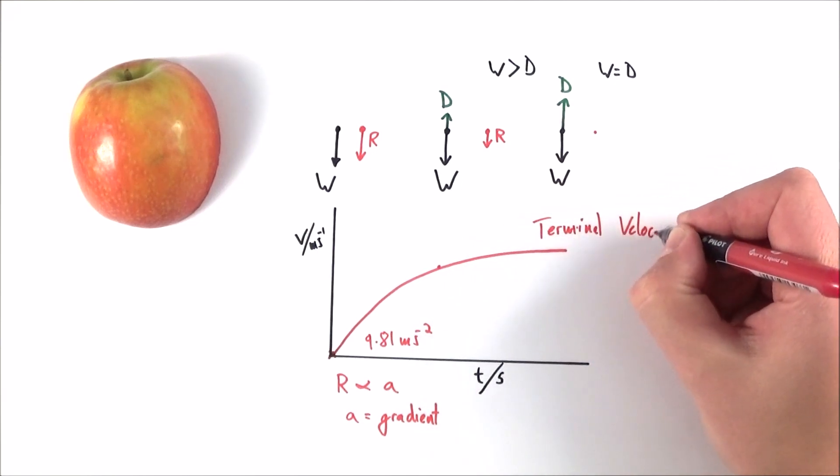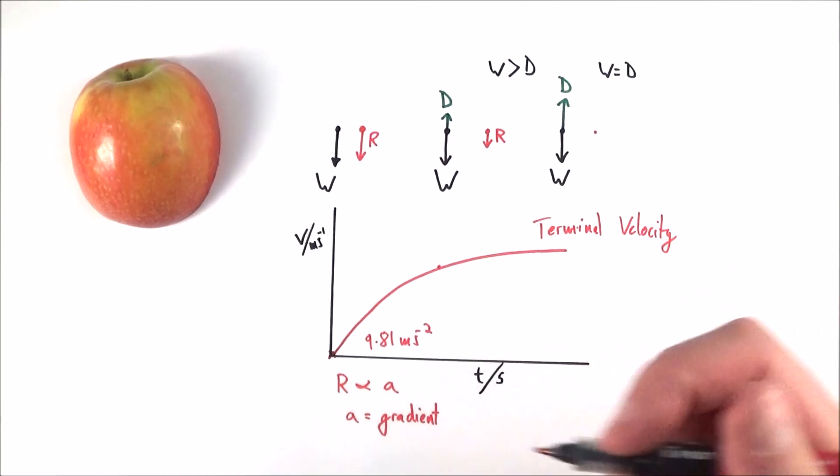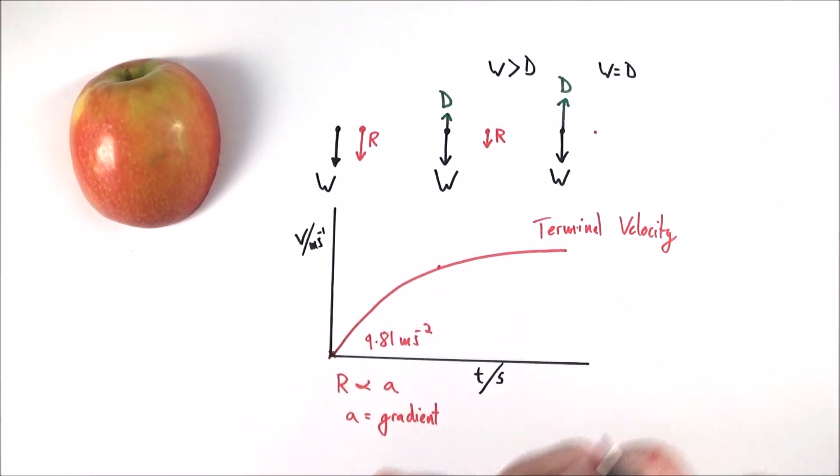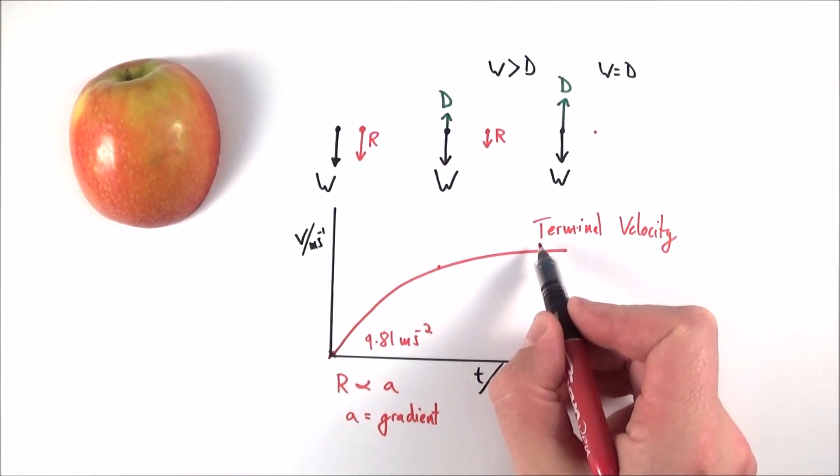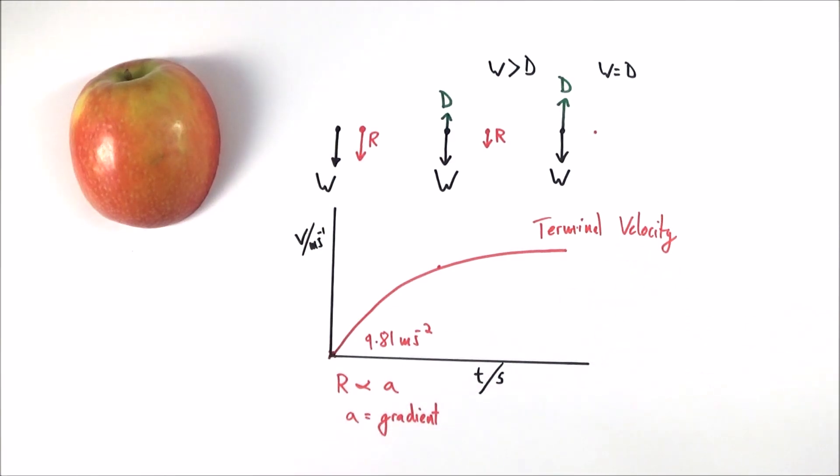Remember, terminal means the end. For example, maybe an airport terminal is at the end of your journey, so basically this is the end velocity of this object.